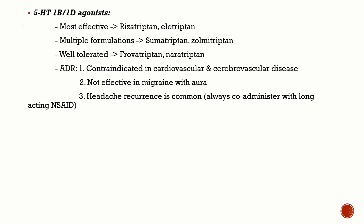Triptans are 5-HT1B/1D agonists used for moderate to severe migraine attacks. The most effective triptans are rizatriptan and eletriptan — efficacy is determined by T-max. Sumatriptan and zolmitriptan are available in multiple formulations including IM, subcutaneous, oral, and intranasal. Well-tolerated triptans with a better side effect profile are frovatriptan and naratriptan.